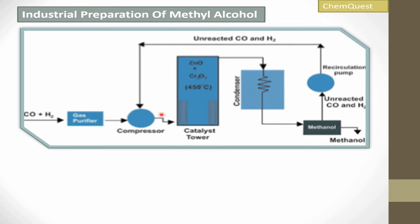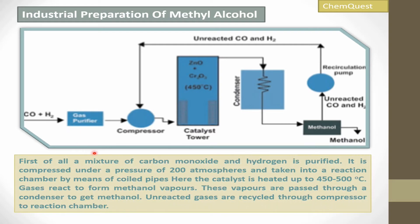These gases then pass through the compressor under 200 atmospheric pressure, where both gases are compressed. First of all, the mixture of carbon monoxide and hydrogen is purified, then compressed under a pressure of 200 atmospheres, and then taken into the reaction chamber by means of coiled pipes.